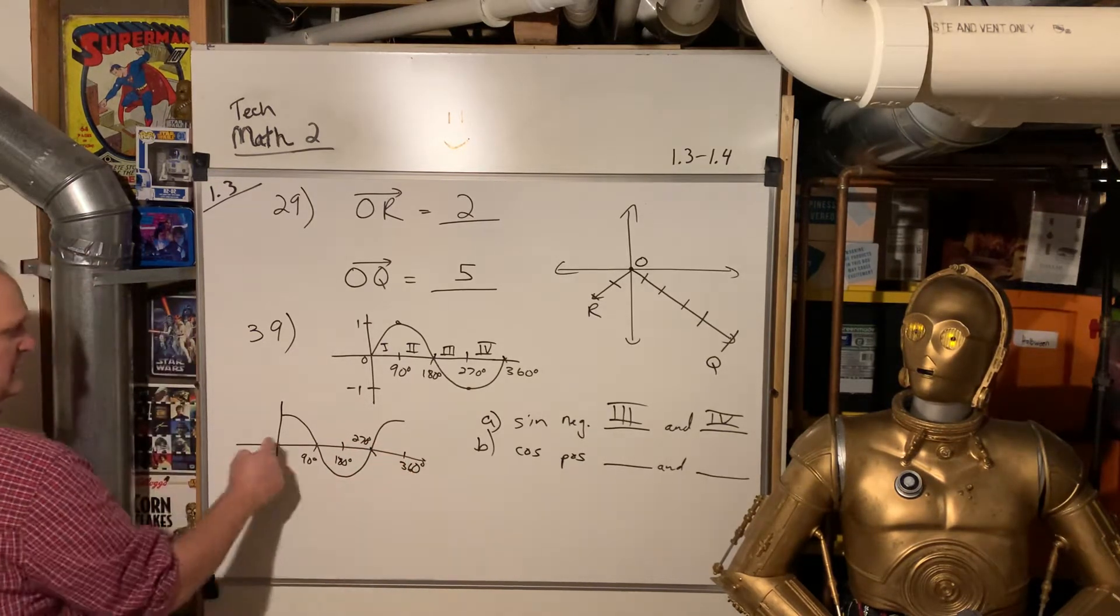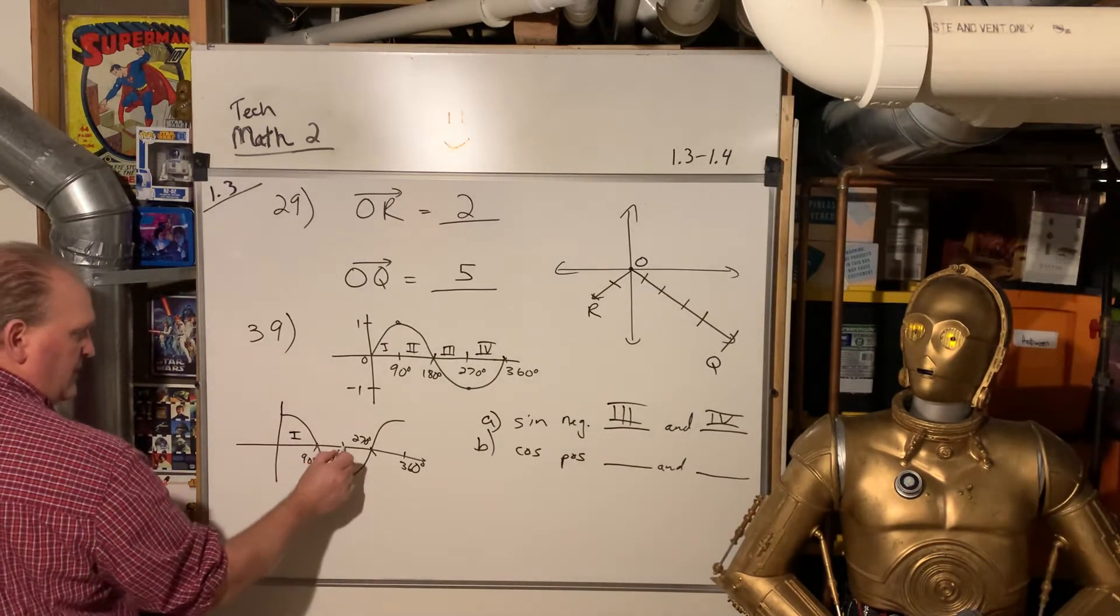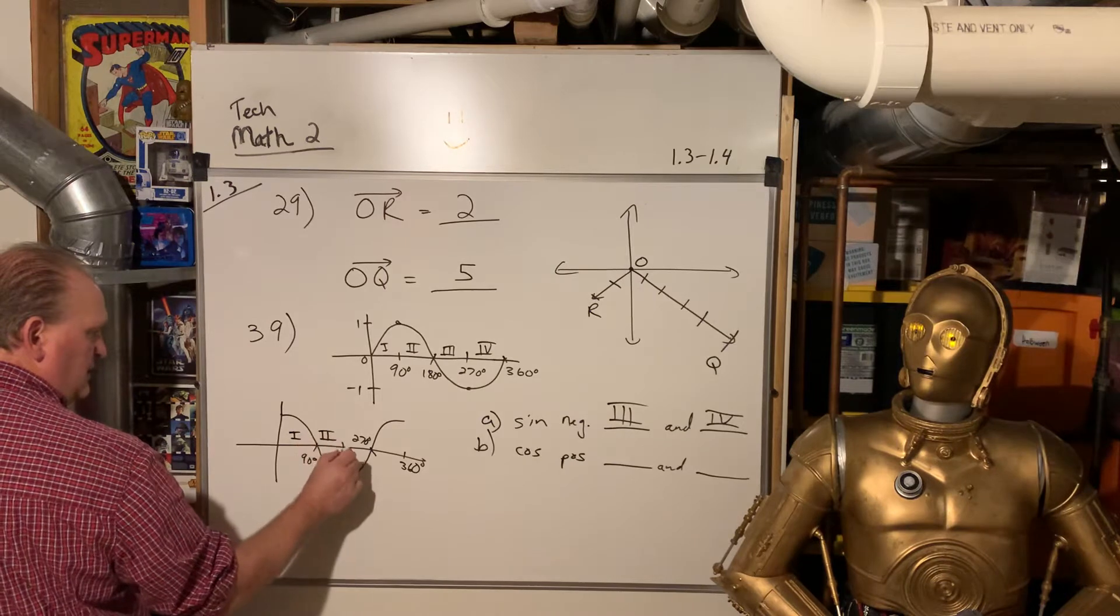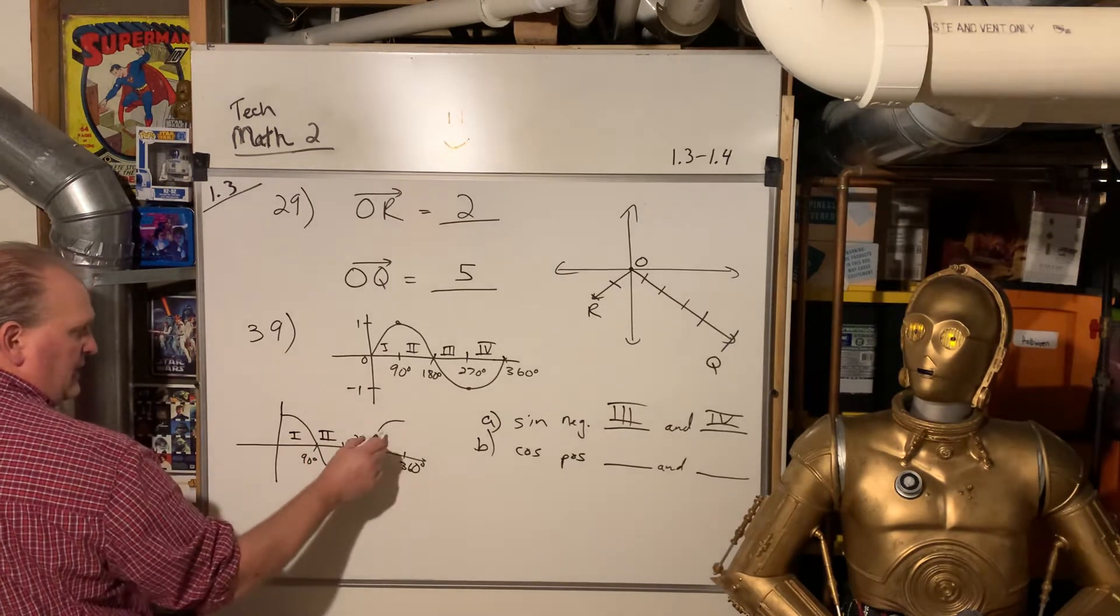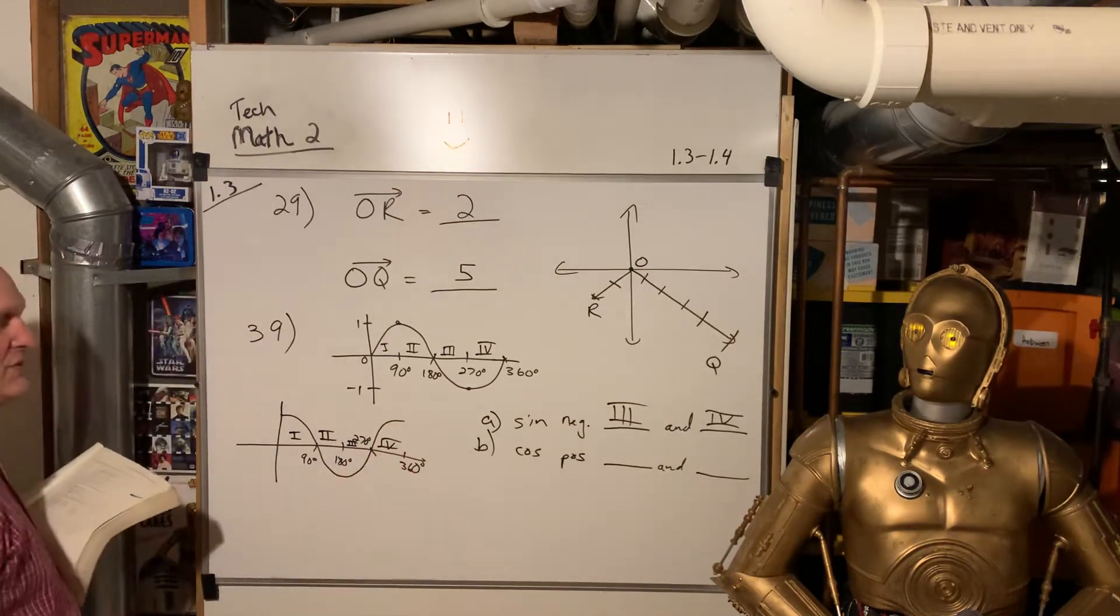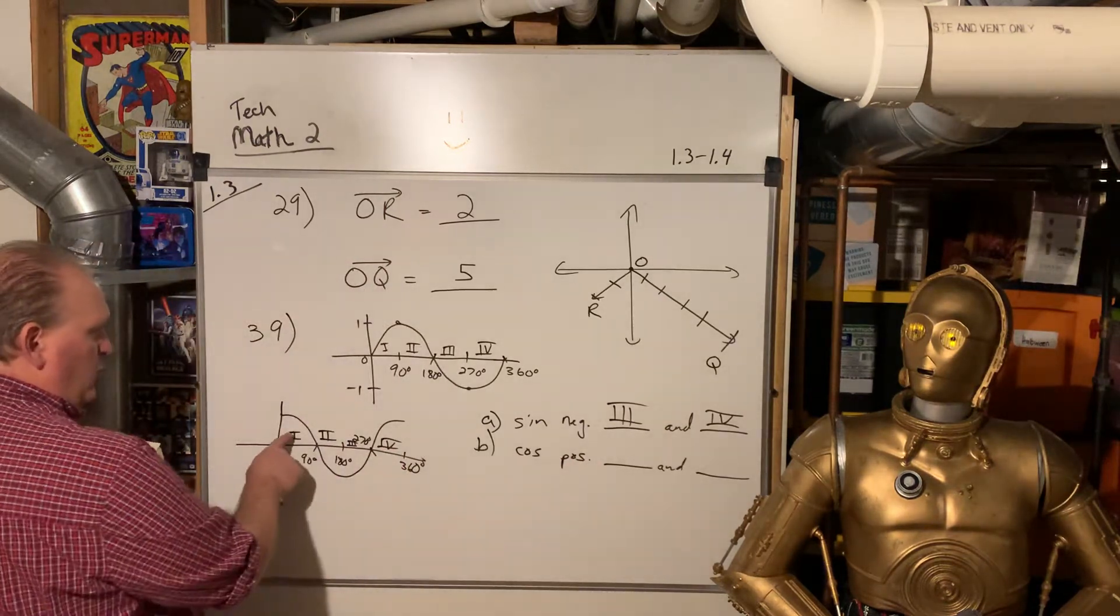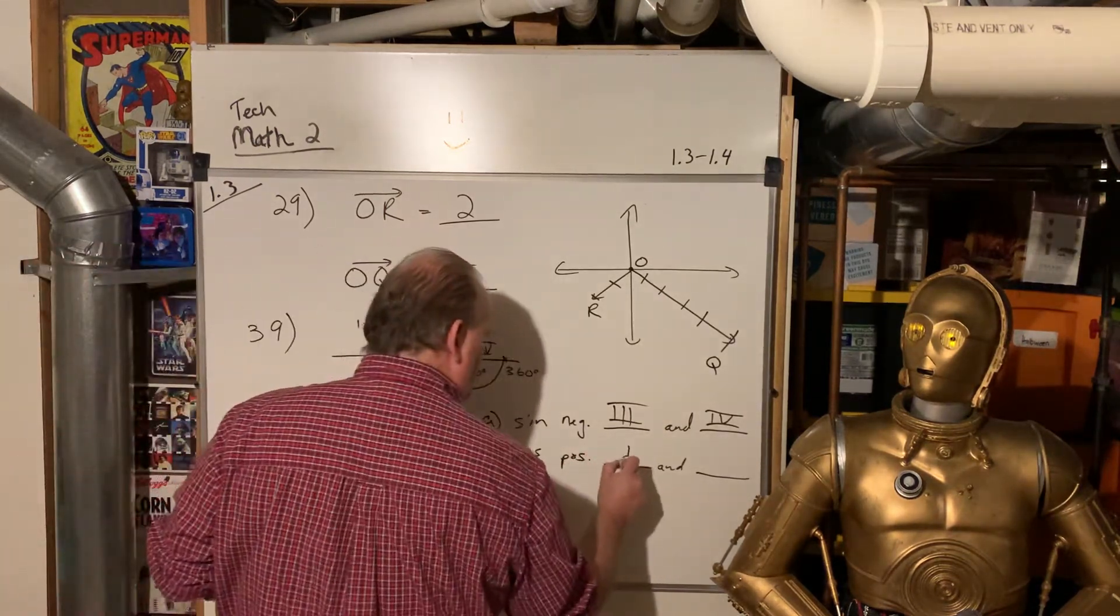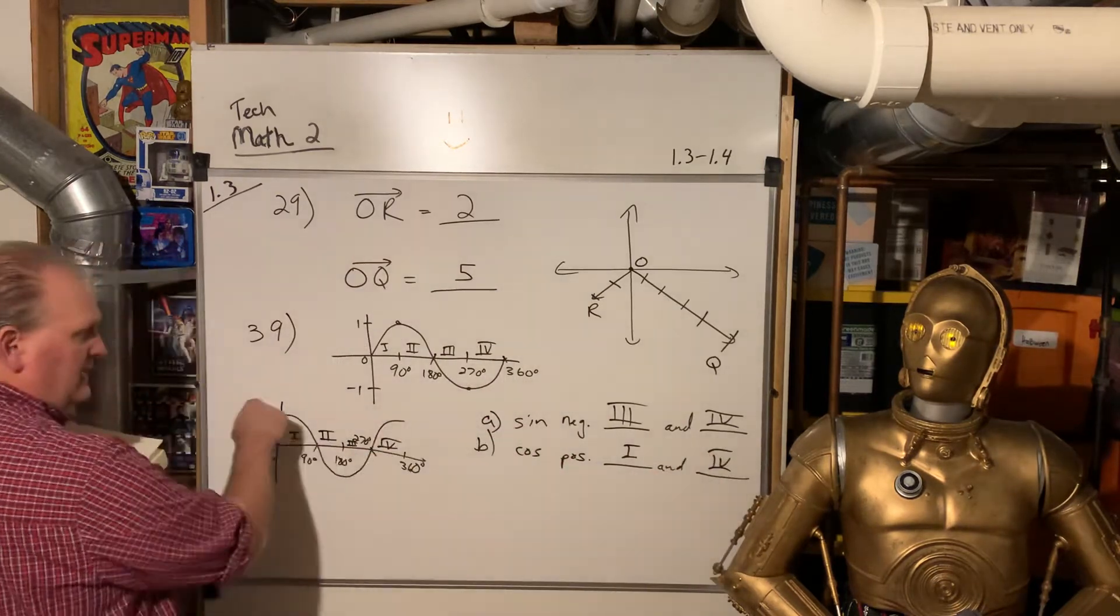And if we look at the quadrants, 0 to 90, that's 1. From here to here is 1. From here to here is 2. From 180 to 270 is 3. And from 270 to 360 is 4. So the cosine is positive in what quadrants? Well, that would be 1 and 4. Because that's where it's above the x-axis.